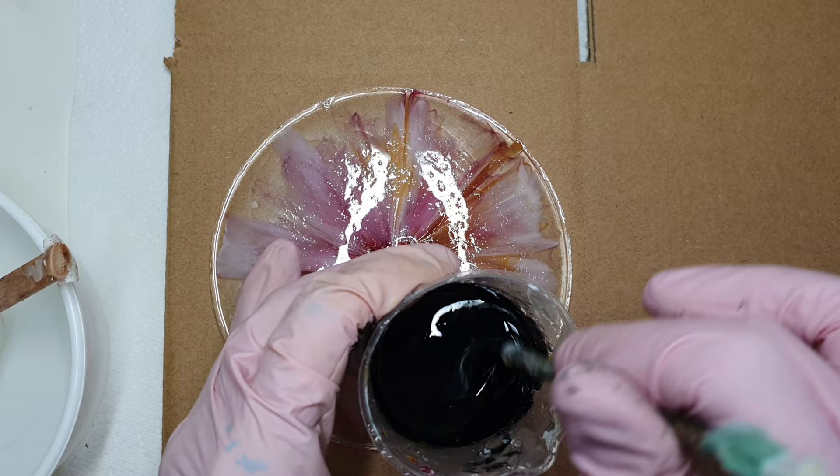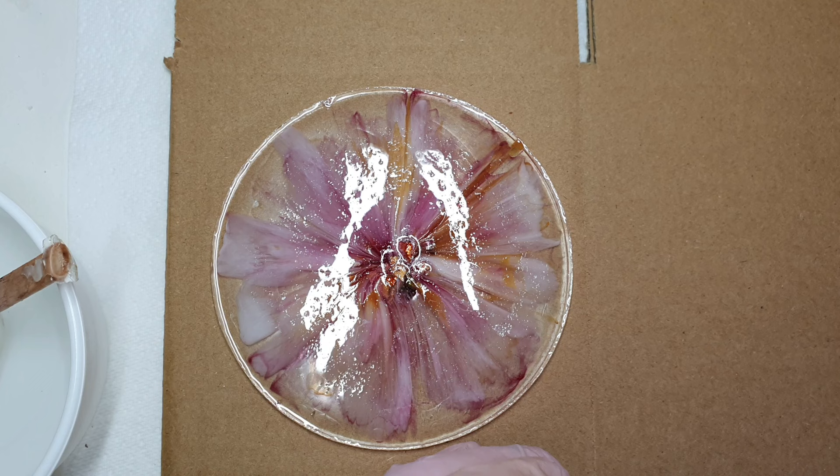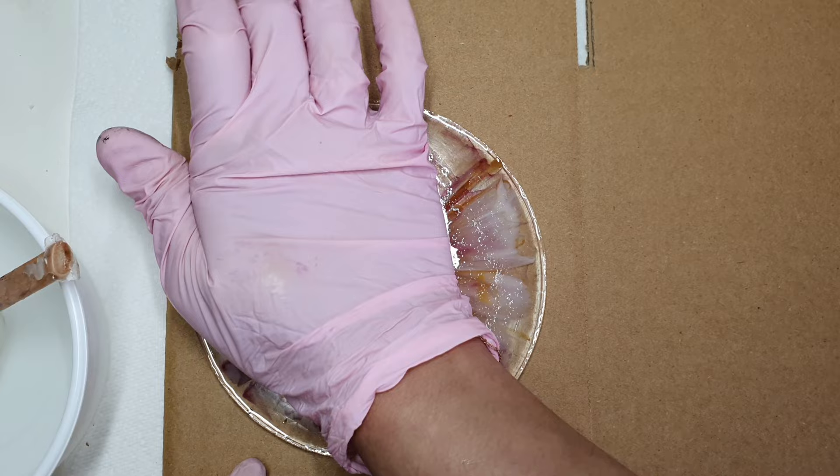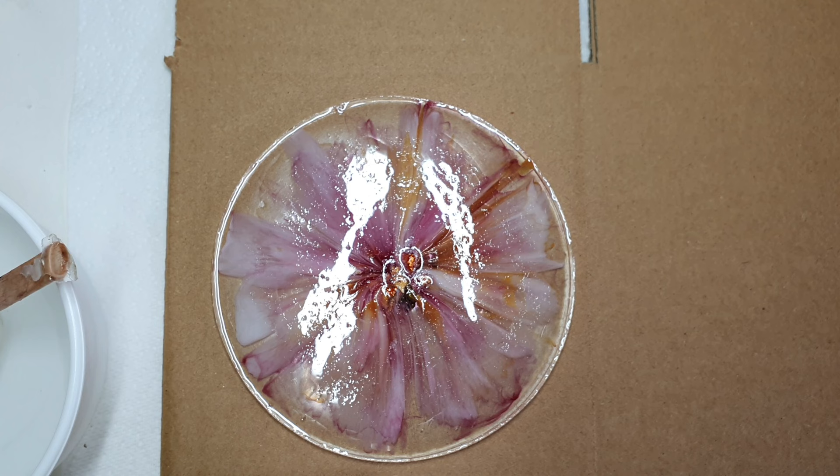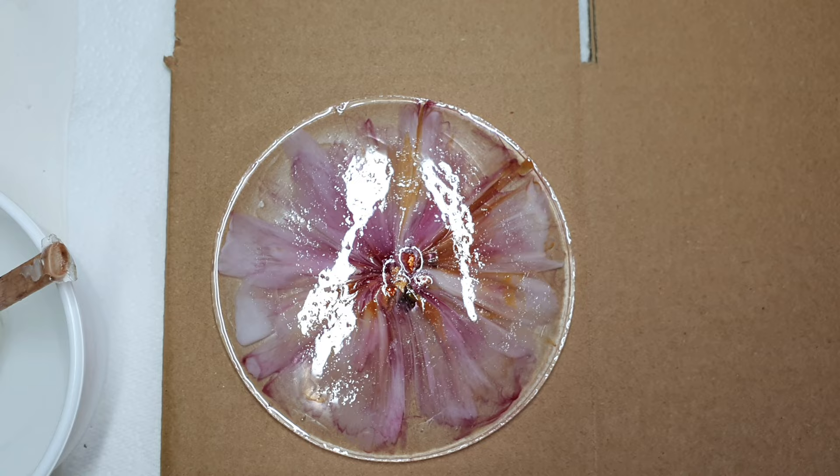I already mixed some black epoxy pigment into the resin. My coaster was placed in a place that was not balanced, so it had a curve inside. I was pressing it down. That's what I was doing if you were wondering.